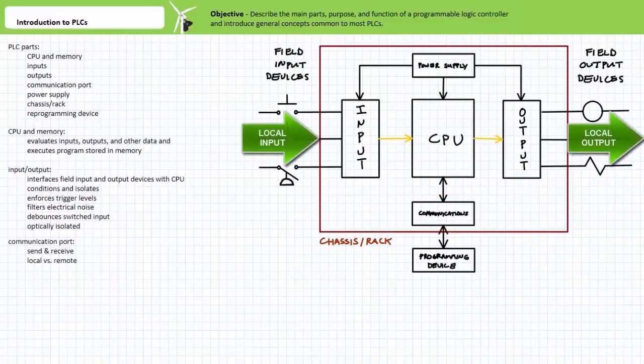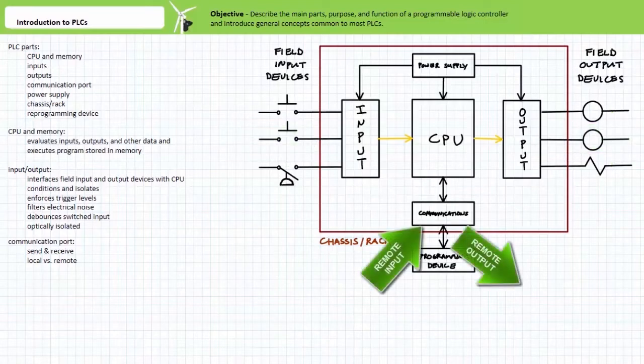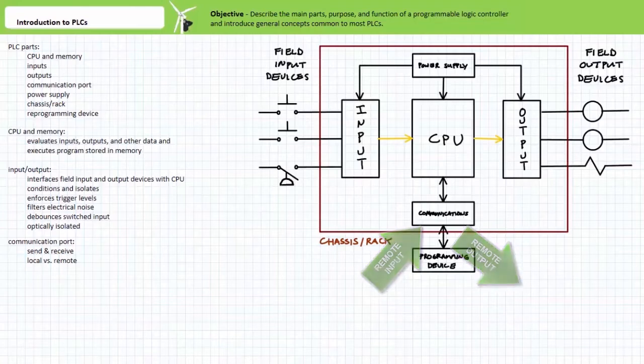Input or output could therefore be local or at the point of use of the PLC, or remote, meaning these signals come from a different place via the communication port. Delivery of remote inputs and outputs via the communication ports saves the necessity of multiple long wire runs.